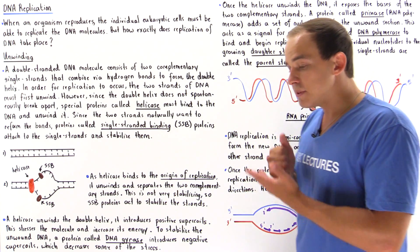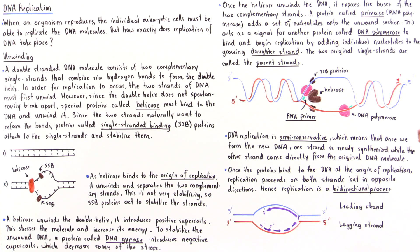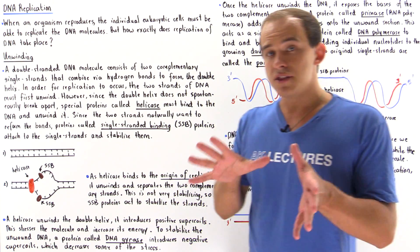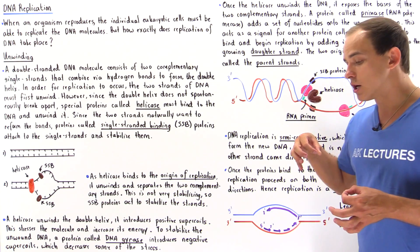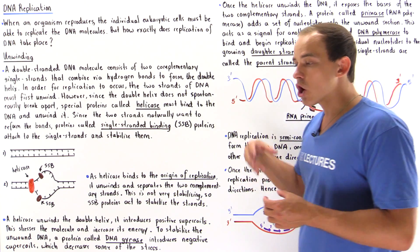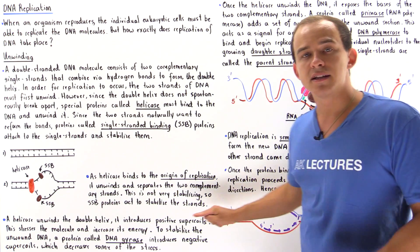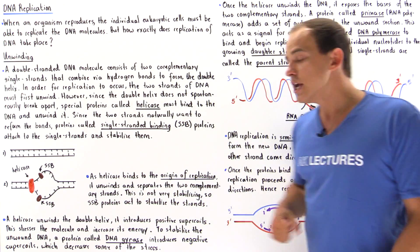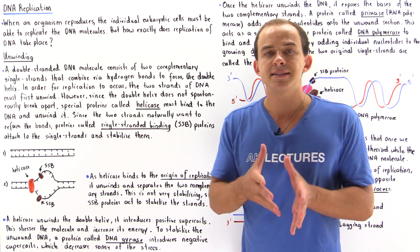As we'll discuss in the next lecture, one of these strands is known as the leading strand because nucleotides are added continuously one by one along a single direction. The other strand is known as the lagging strand because it is synthesized in a discontinuous fashion, as we'll discuss in the next lecture.